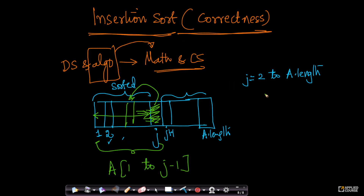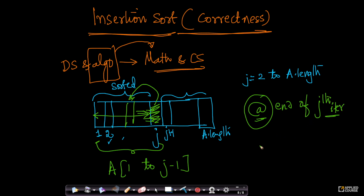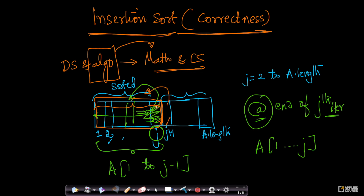At the end of the jth iteration, everything from A[1] up to A[j] is sorted. Because I have taken the jth element and placed it appropriately so that the whole sub-array up to A[j] is sorted. In the next iteration, I take the next value and insert it into this sorted array.